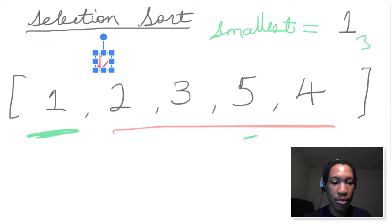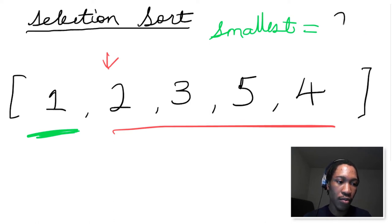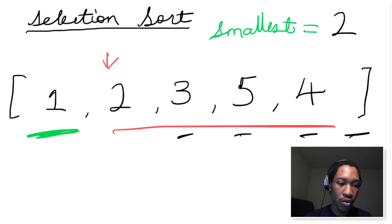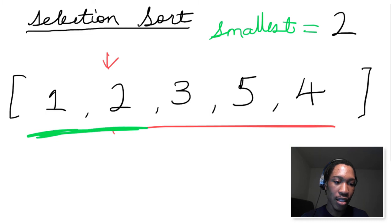We move our pointer to the next element, 2, and now we look for the smallest element to swap with 2. Current smallest element is 2. We search through the remaining elements: is 3 smaller than 2? No. Is 5 smaller than 2? No. Is 4 smaller than 2? No. So we're done iterating through this subarray without finding any number smaller than 2. We know for sure that 2 is already in its rightful position. So we safely extend the length of our sorted array to include 2.